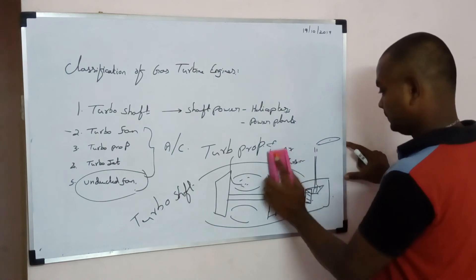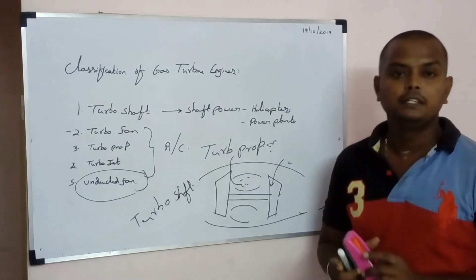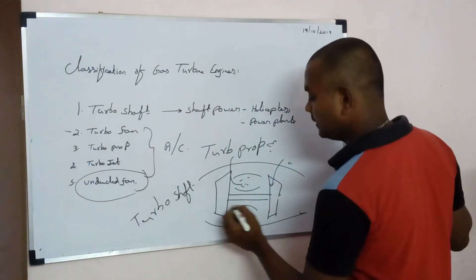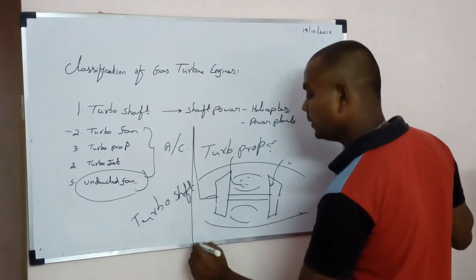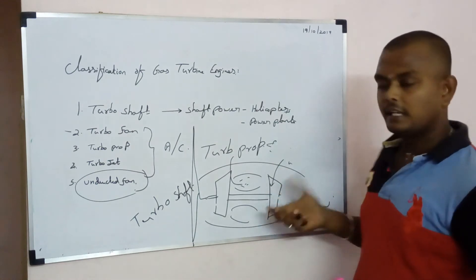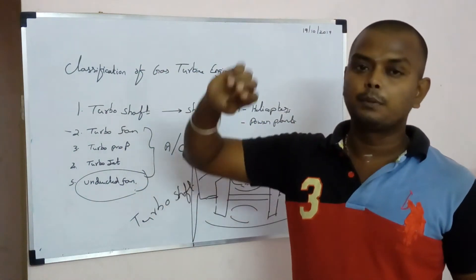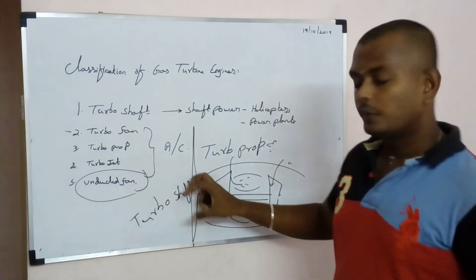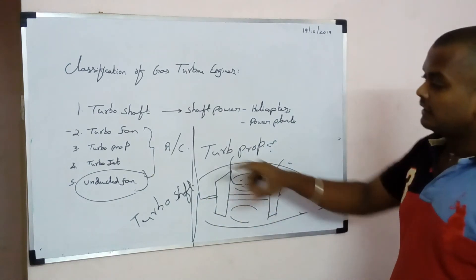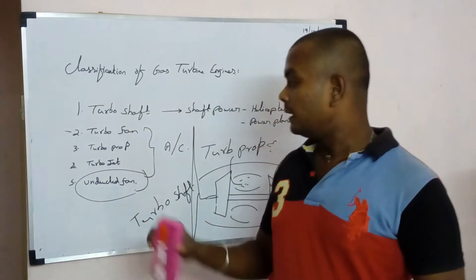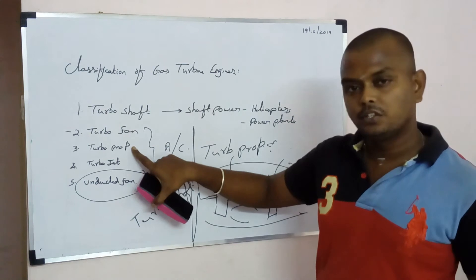Here we don't need shaft power — we need thrust. The turbo prop has a similar diffuser, compressors, and combustion chambers, plus a big propeller fan. When the engine starts giving power, it automatically rotates a huge fan. In aircraft you can see large propeller blades; as these rotate they suck air and the aircraft moves forward. The turbo fan is essentially a more advanced version of the turbo prop, commonly used in commercial aircraft.